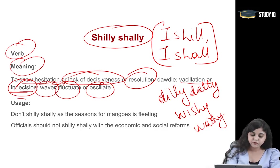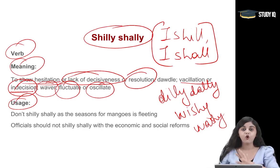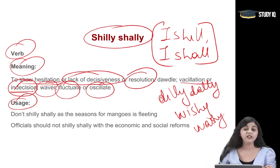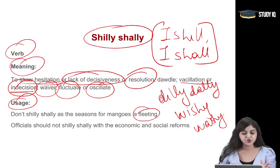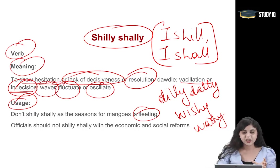Let's look at the usage of shillishalli: 'Don't shillishalli as the season for mangoes is fleeting.' You shouldn't be indecisive or in doubt, oscillating — you should be decisive because this mango season is fleeting, that is temporary. 'Officials should not shillishalli with economic and social reforms.' So officials should be proper with their decisions — absolutely resolute, not oscillating. They should be firm, decisive and resolute. When you are not able to decide, that is called shillishalli.